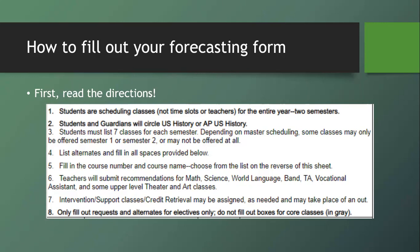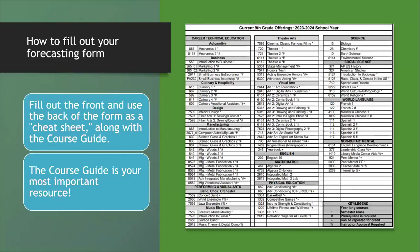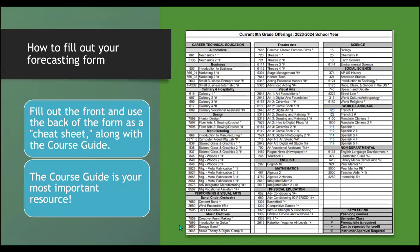The back of the forecasting sheet is a quick-reference cheat sheet for course numbers, but really the course guide is the best option for deciding on classes. We want to encourage students not to rely only on this cheat sheet, as it's very bare-bones and doesn't have all the information needed to make the best choice.